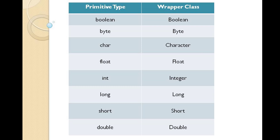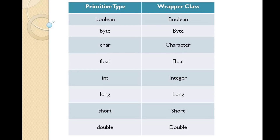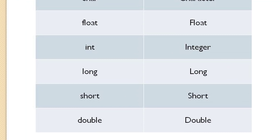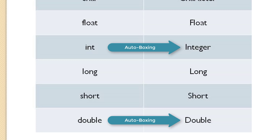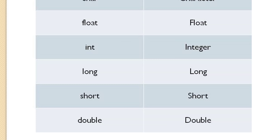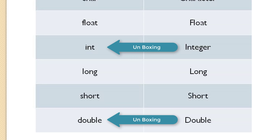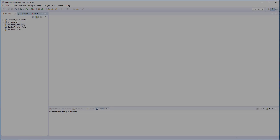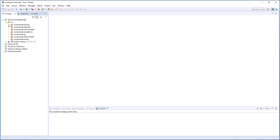After understanding what wrapper classes are, let's answer the next question: what is the meaning of auto boxing and unboxing? Auto boxing is an automatic conversion that the Java compiler makes between primitive types and their corresponding wrapper classes — for example, converting an int to an Integer, or a double to a Double object. If the conversion goes the other way, we call it unboxing. Let's see some examples.